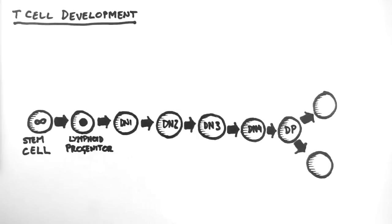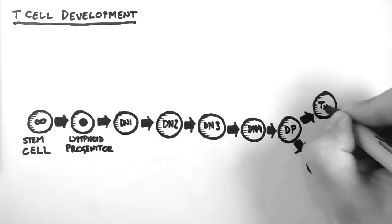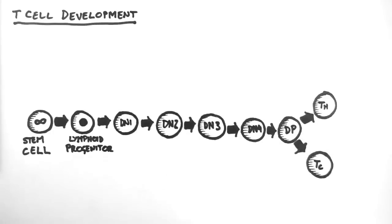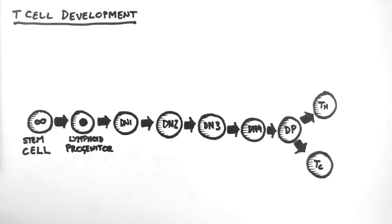The double positive cell then goes on to become either a helper T cell, denoted T with a small h, or a cytotoxic T cell, denoted T with a small c. These two cell types can be considered as single positive cells, so let's talk about what that means now.